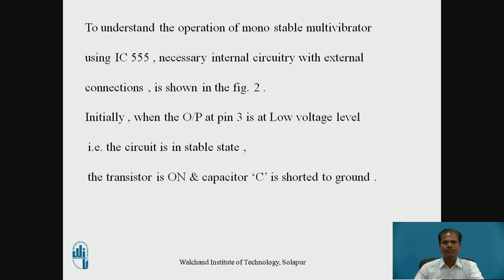Initially, when the output at pin number 3 is at low voltage level — the stable state of the monostable multivibrator — the circuit is in stable state. The internal discharge transistor is on, and the external capacitor connected to pin number 7 is shorted to ground, so the external capacitor will not charge to any voltage.